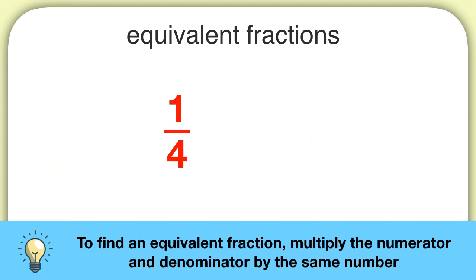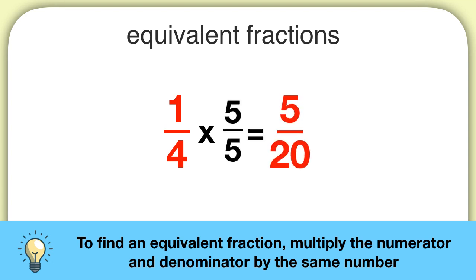For example, if we wanted to find an equivalent fraction of 1 fourth, all we would need to do is multiply the numerator and denominator by the same thing. We could pick any number, like 5 over 5. That would give us 5 twentieths. And because we multiplied the numerator and the denominator by the same number, we know 5 twentieths will be equivalent.